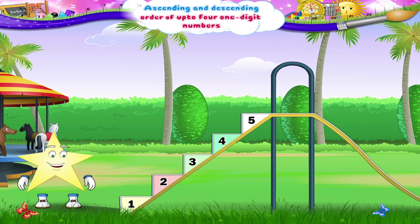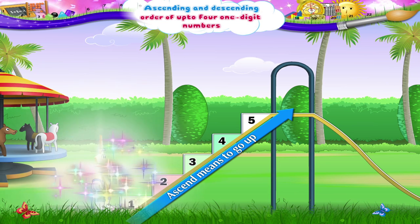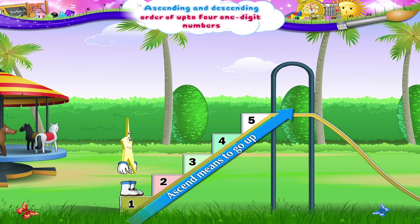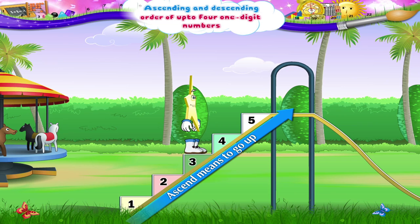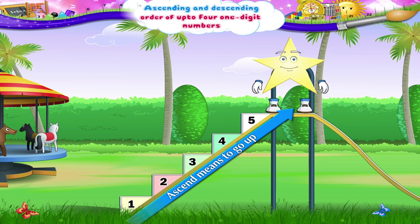Look, you have to ascend the steps from here. Ascend means to go up, Starry. So, to go up the stairs, we go one, two, three, four, five. Here we are at the top.